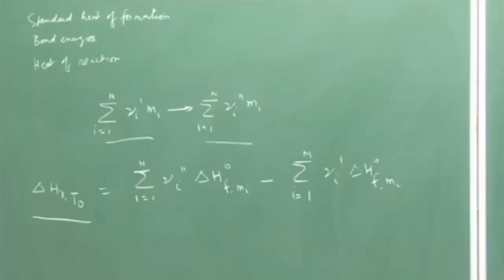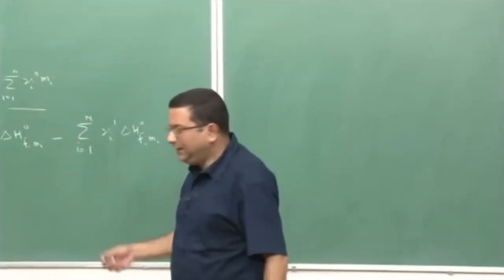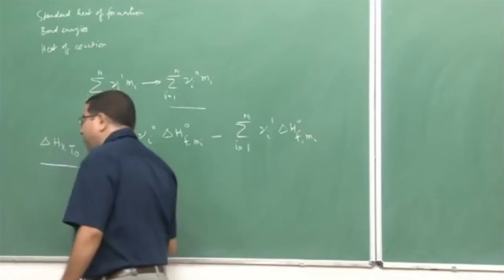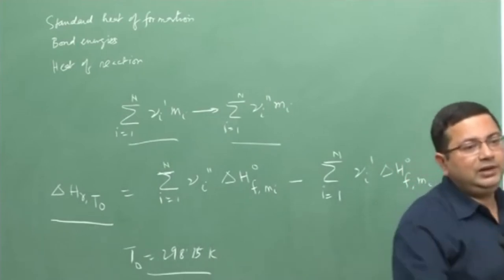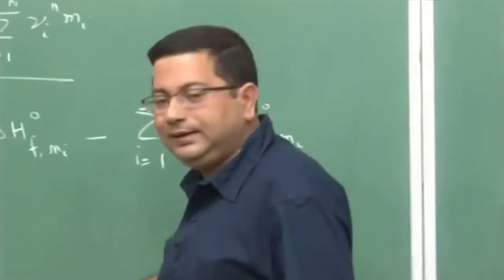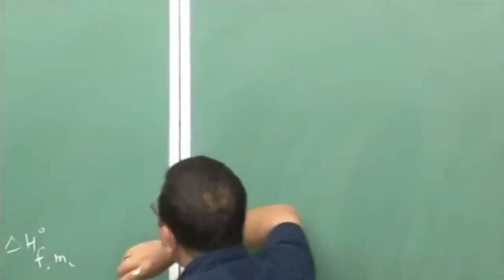Very rarely — actually, almost never — will a reaction occur at standard temperature of 298 K. Most of the time the reaction occurs at some other, typically higher, temperature. So the question arises: if the temperature is different from standard temperature, how do we estimate the heat of reaction? Looking at thermochemical laws, whether the reaction takes place in one step or multiple steps, as long as the initial and final states are the same, the change in enthalpy will be the same. Based on that, we devised a schematic.